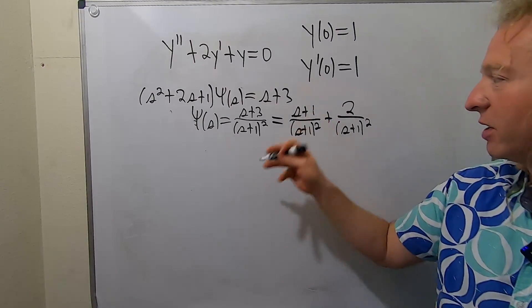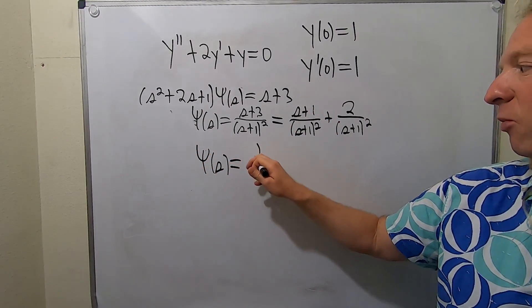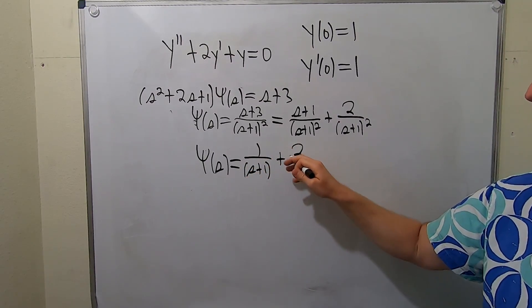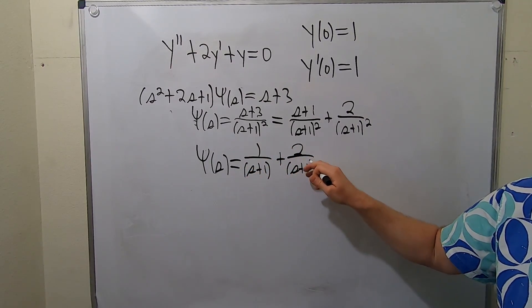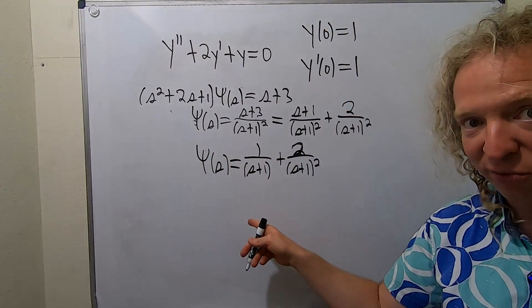You can do that because one plus two is equal to three. You say, well, why'd you do that? Well, because now they cancel. So we have pitchfork Y of S. Beautiful problem. One over S plus one plus two over S plus one squared. So this is equal to the Laplace of Y.